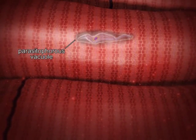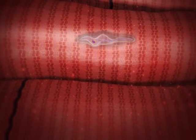Inside the vacuole, the Trypomastigote transforms into an amastigote form.